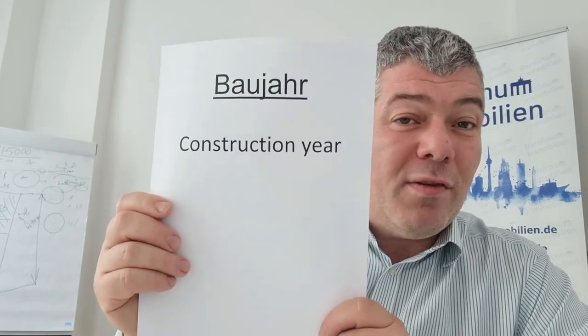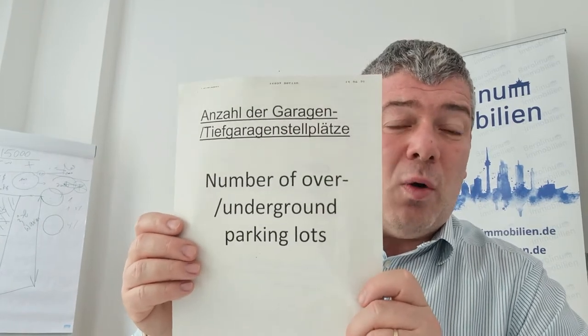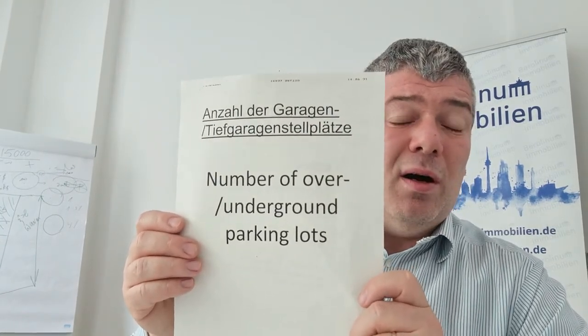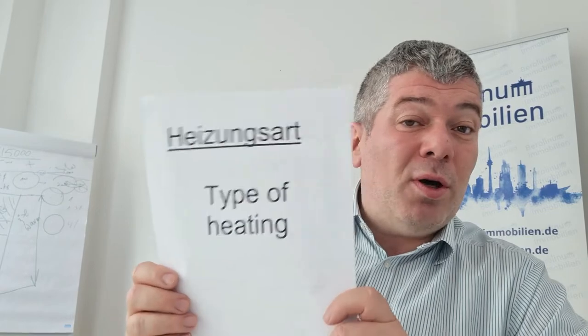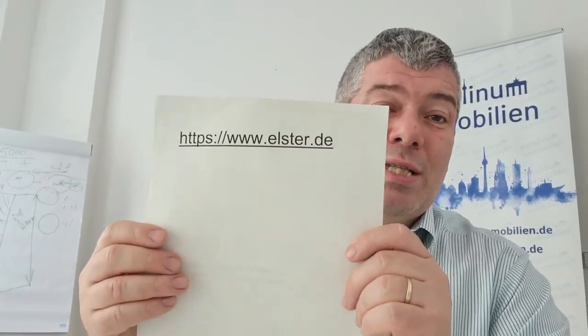The state wants to know the construction year of your property. They also want to know the number of above or underground parking lots on your property, and the type of heating in your property. That's currently all we know about this law. In the description to this video, I will put the link to the Berlin government's explanation of this law and the link to the Elster tax portal.